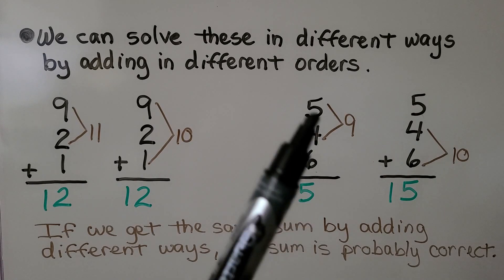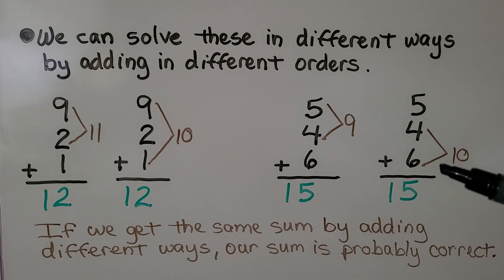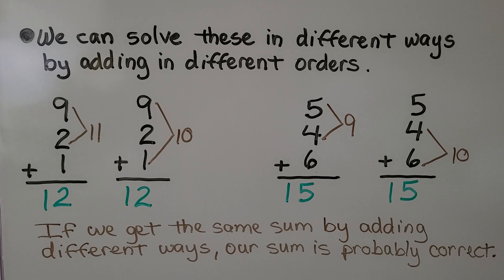For this one, we can add the five plus the four to equal nine, then add the six to equal 15. We could also add the four and the six together first to make a 10, then add the five to equal 15. If we get the same sum by adding different ways, our sum is probably correct.